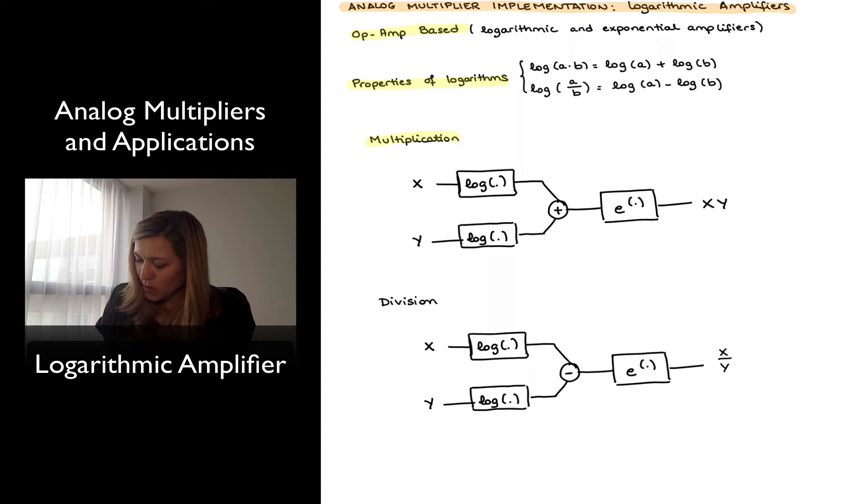It works a little bit as follows. The output of my logarithmic amplifiers will be, in the first case, log of x and log of y, and now I am adding them together, and that's equal to the log of x times y, just by the properties of logarithms. And now I can take my anti-log of that function, so basically e to the log of x times y, and that's going to give me xy. So that's what we get out of this first circuit.